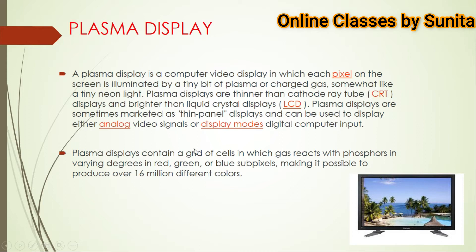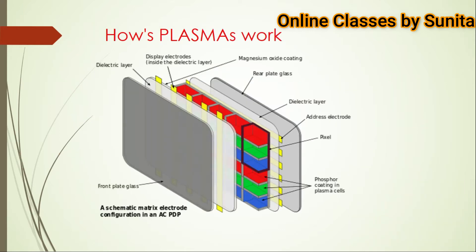Plasma displays contain a grid of cells in which gas reacts with phosphors in varying degrees in red, green, and blue sub-pixels, making it possible to produce over 16 million different colors. The two gases used are neon and xenon, and these two gases produce the pictures. Let's see how it works.